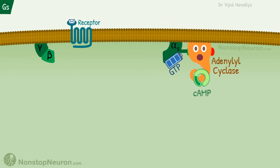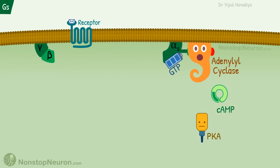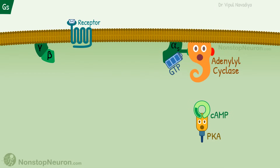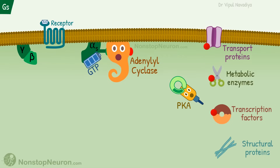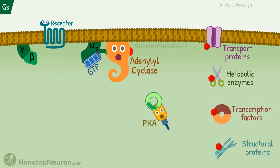The alpha-S subunit stimulates adenylyl cyclase. The enzyme then converts ATP into cyclic AMP, so the concentration of cAMP in the cell increases. Increased cAMP concentration leads to activation of cAMP-dependent protein kinase A. PKA phosphorylates different transport proteins, metabolic enzymes, transcription factors, or structural proteins. This phosphorylation modulates the activity of these proteins, which in turn affects various cellular functions.